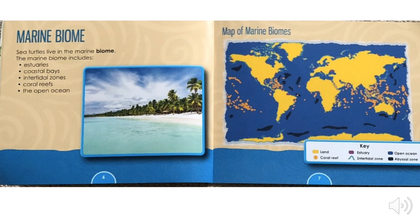Map of marine biomes. Key: land, estuary, open ocean, coral reef, intertidal zone, abyssal zone.